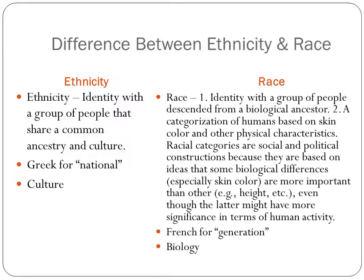We start out with ethnicity. That is what this chapter is called. The chapter is not called race. The chapter is not called nationality. It's called ethnicity. So what is that? Here's the definition: identity with a group of people that share a common ancestry and culture. One really big thing — we're underlining the important parts of this definition. Hopefully you underlined common ancestry and, probably most important in terms of differentiating this from other terms, culture.